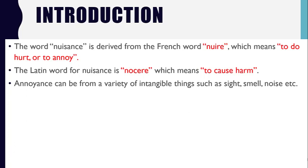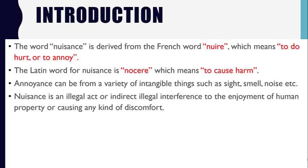This harm or annoyance or disturbance can be in any form — it can be in the form of any intangible thing such as sight, smell, or noise. Nuisance is an illegal act or indirect illegal interference with the enjoyment of human property or causing any kind of discomfort. These kinds of illegal acts that prevent someone from enjoying their property are called nuisance.